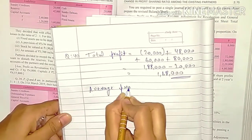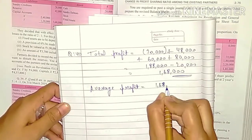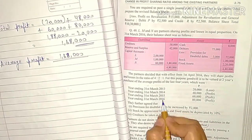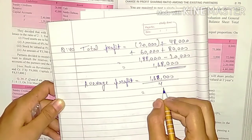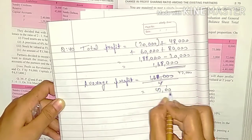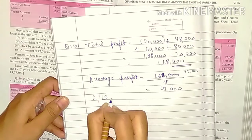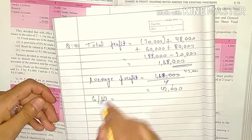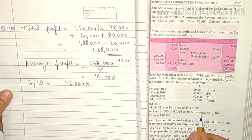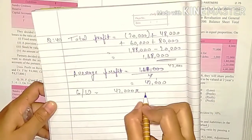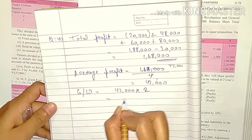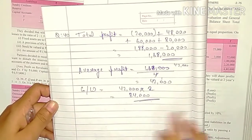Average profit = Total profit ÷ Number of years. There are 4 years, so 1,68,000 ÷ 4 = 42,000. Average profit is 42,000. Now calculate goodwill. Goodwill = Average profit × Number of years purchase = 42,000 × 2 = 84,000.